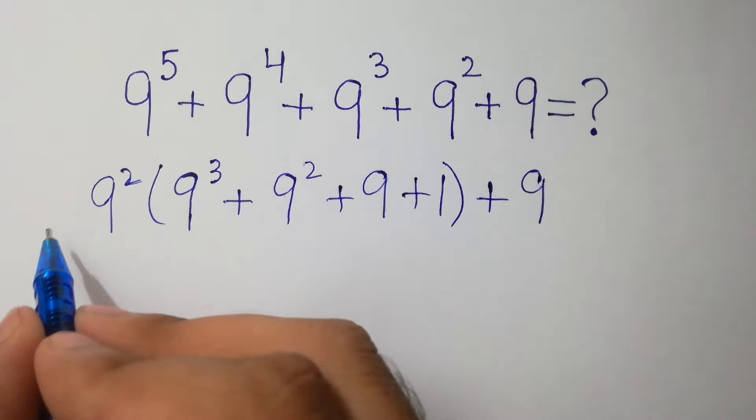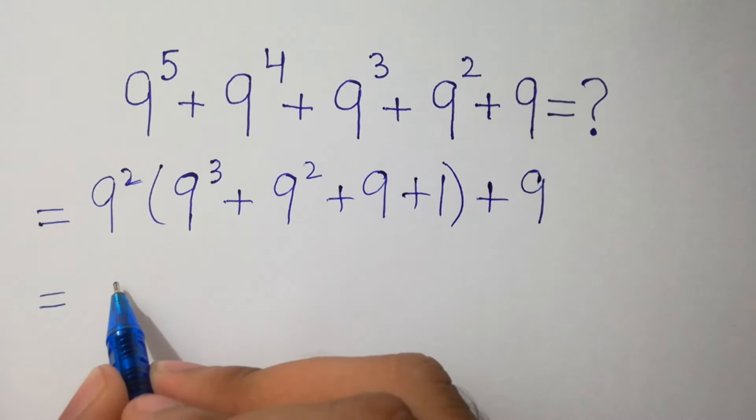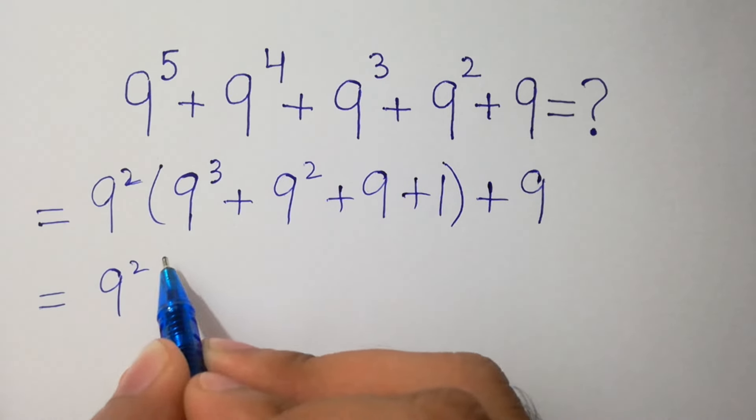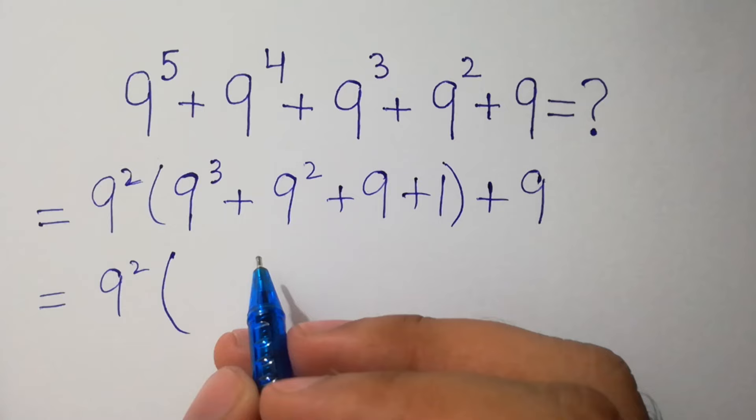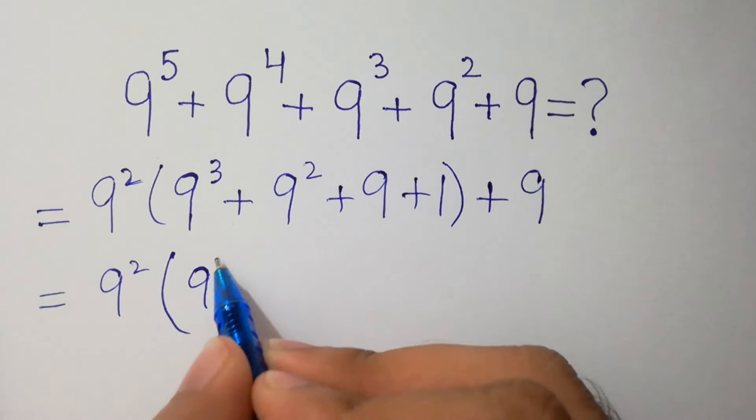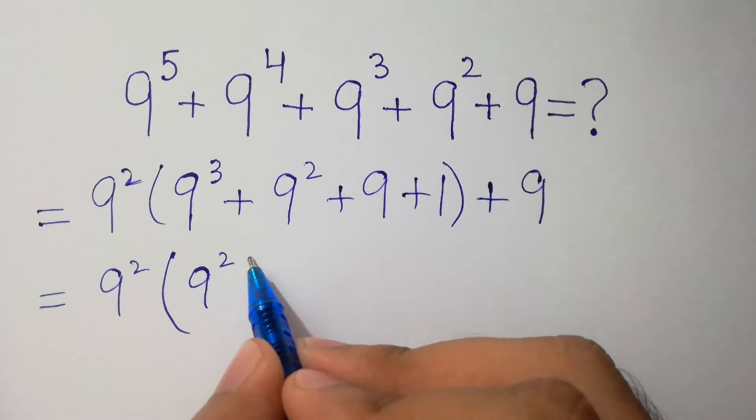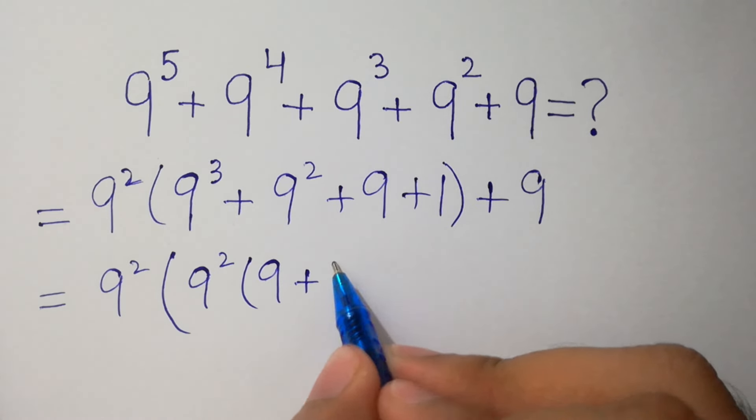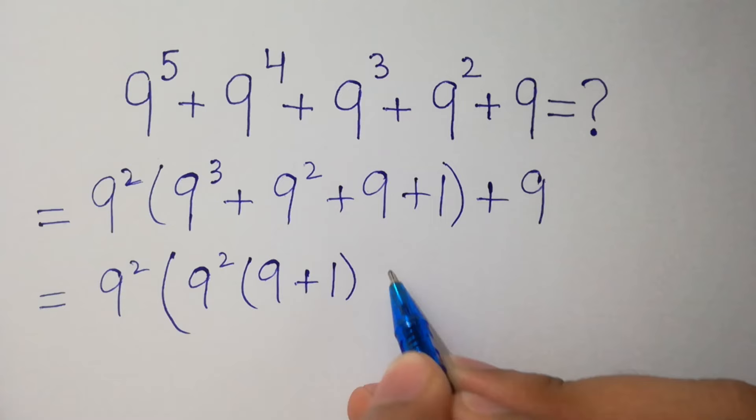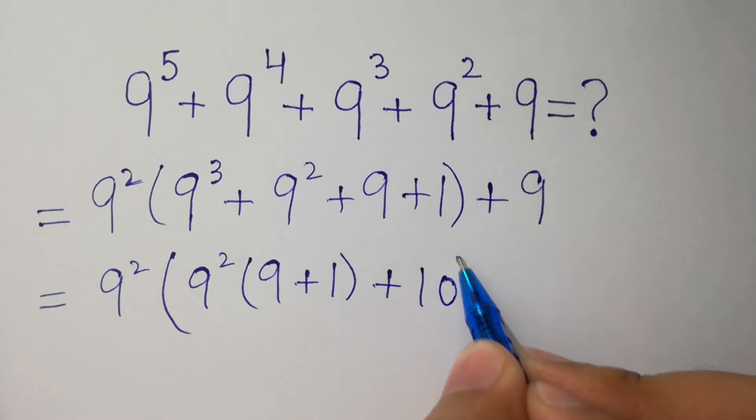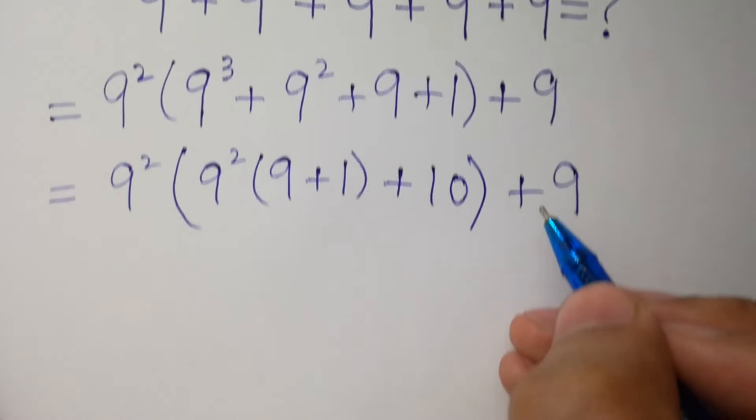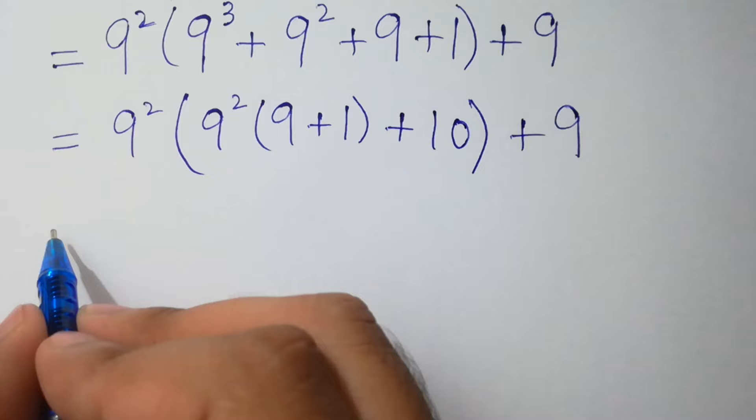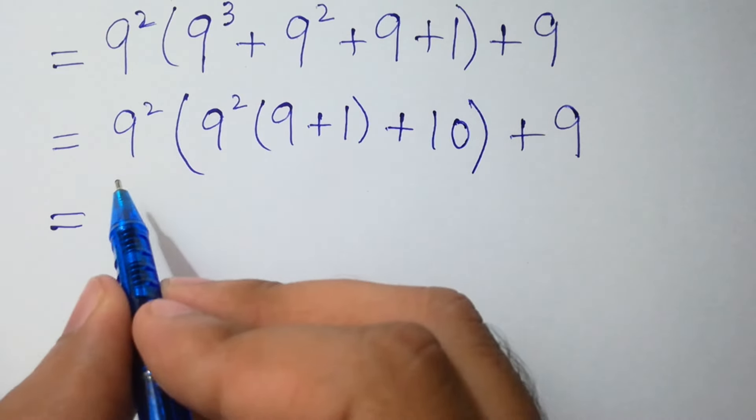Second step, we can again factor out 9 square. We have 9 square times 9 square times 9 plus 1, close bracket, plus 10, close bracket, plus 9.